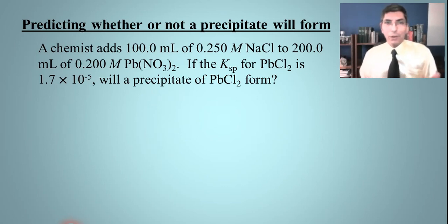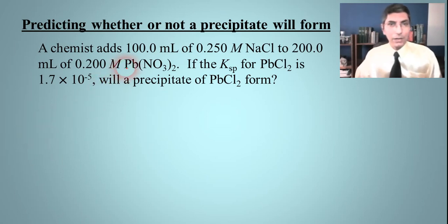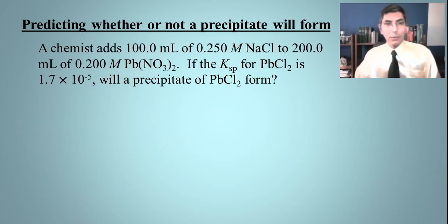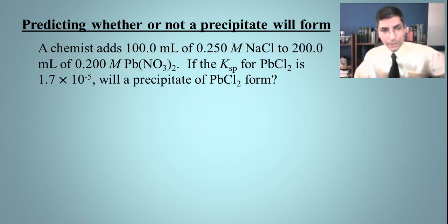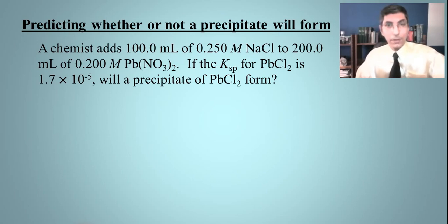We have the right ions to make this happen — we have lead ions and chloride ions. We know that the KSP represents a threshold. If you go past that threshold, you'll have a precipitate of lead(II) chloride form. If you don't, you won't have a precipitate.